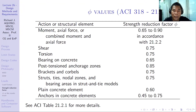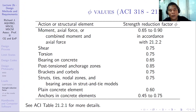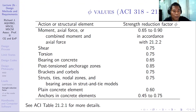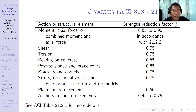Here is a table for the different strength reduction factor values taken from ECI Section 21.2.1. For moment, axial force, or combined moment and axial force, phi ranges from 0.65 to 0.9. For shear it is 0.75; for torsion, 0.65; for bearing on concrete, 0.65; post-tension anchorage zones, 0.85; brackets and corbels, 0.75; strut-and-tie models, 0.75; plain concrete elements, 0.6; and anchors in concrete, 0.45 to 0.75. The more important the structural element, the lower the strength reduction factor.